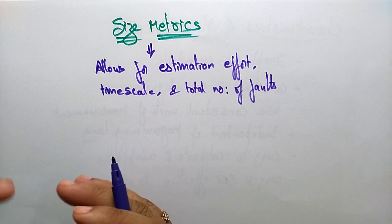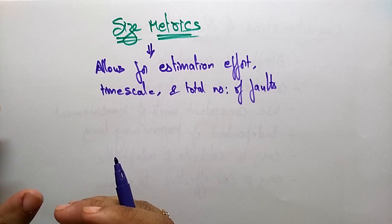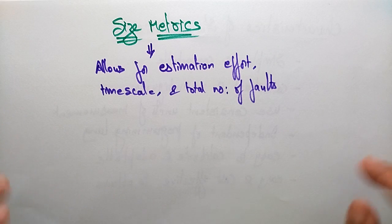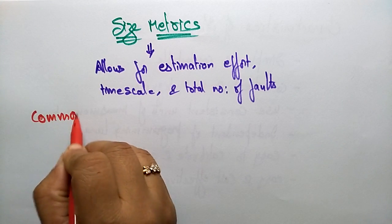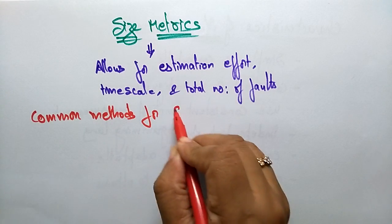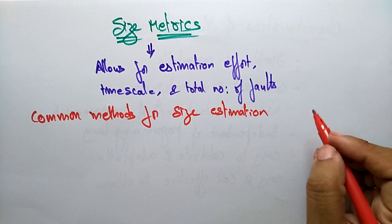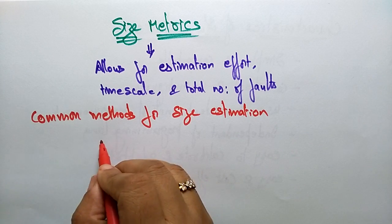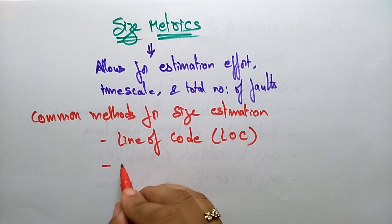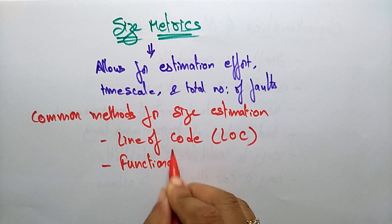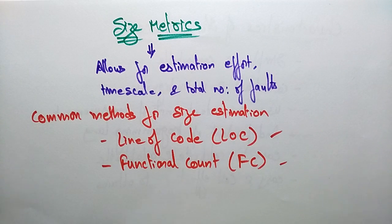Estimation of size is a critical and difficult area of project planning when compared to others. There are some common methods for size estimation of a process or a product. The two common methods are: Line of Code, that is LOC, and Functional Count, that is FC.